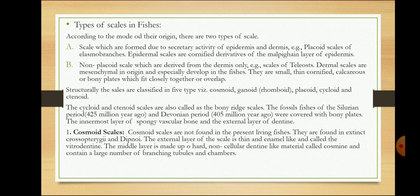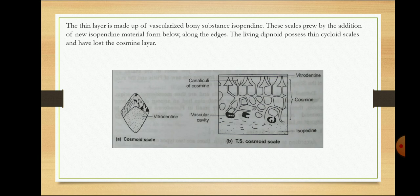On the basis of shape and size, scales are of many types. Cosmoid scales are not found in present living fishes; they are found only in extinct fishes and dipnoi. The external layer of the scale is a thin enamel called vitrodentine. The middle layer is made of hard non-cellular dentine-like material called cosmoid, which contains a large number of branching tubules and chambers seen in the tiers of the scale. The thin inner layer is made of vascularized bony substance known as isopedine.